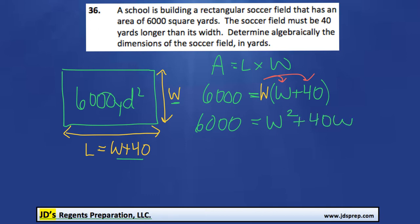Next, we'll move everything over to the right-hand side. So we'll get 0 equals W squared plus 40W minus 6,000. And then now we need to factor this.